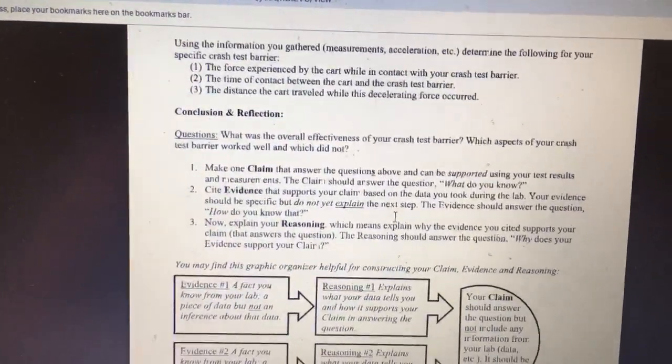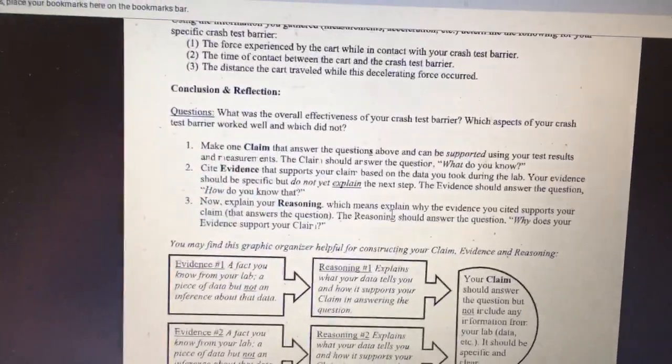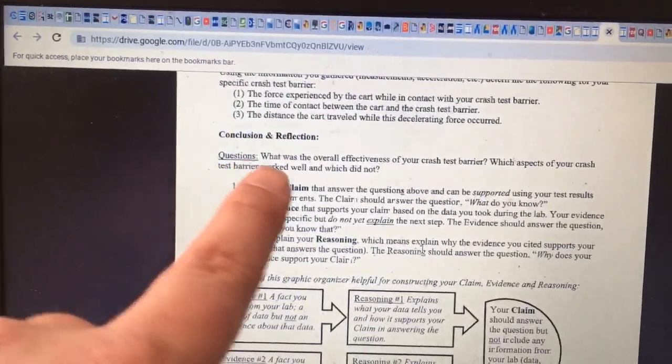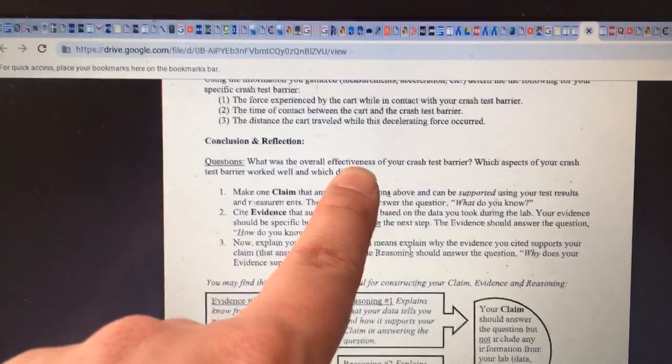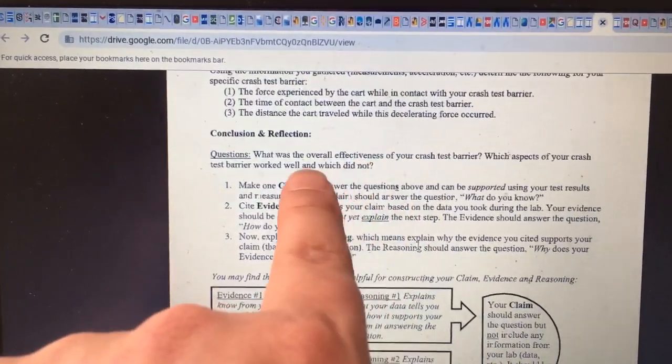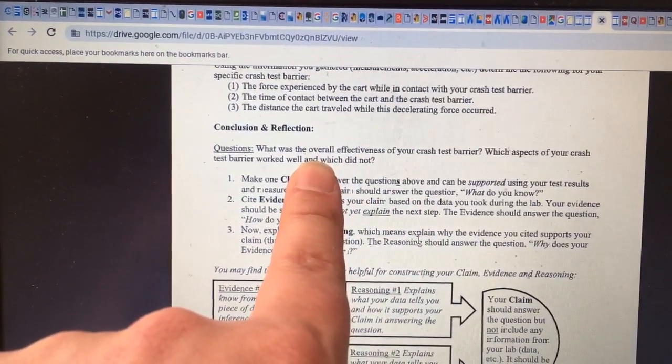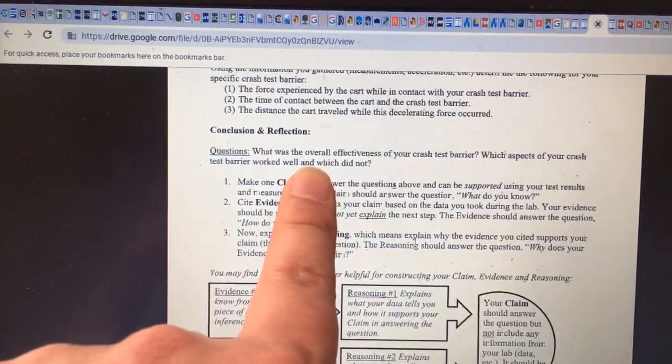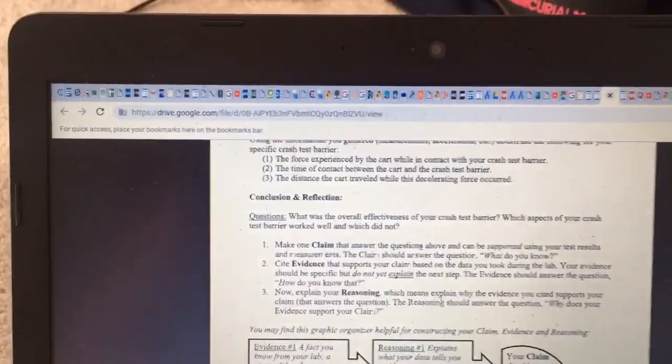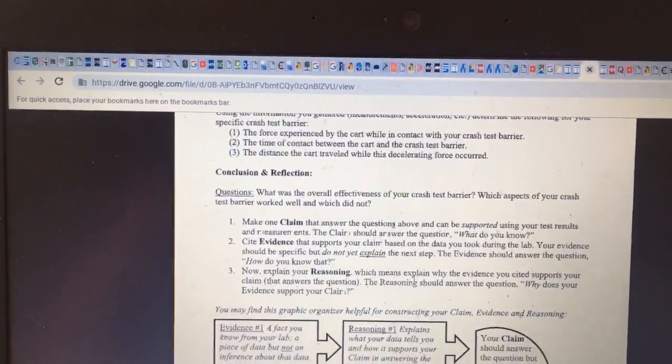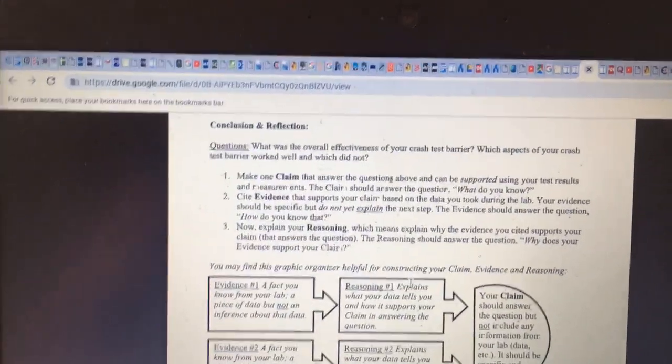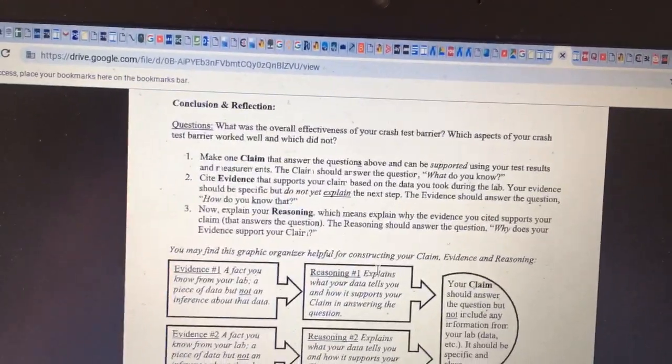And now this brings us to the end. Conclusion. So there are a total of five things you have to do in the conclusion. One is answer this question. We sort of did this in your warm-up. Next is answering this question: Which aspects of your crash test barrier worked well and which did not? So you have different things, different parts of your design. List them, and then say whether they worked well or did not. You have to make a claim, and then cite some evidence and explain your reasoning.